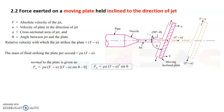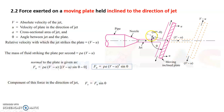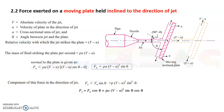The component of Fn in the direction of the jet is Fx. With the angle theta positioned as described, Fx is Fn sine theta (equivalently Fn cos(90 minus theta)), giving Fx equals rho times a times (v minus u) squared times sine squared theta. Similarly, Fy equals Fn cos theta (or Fn sine(90 minus theta)), which is rho times a times (v minus u) squared times sine theta times cos theta.